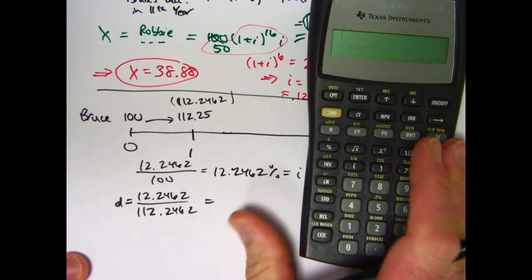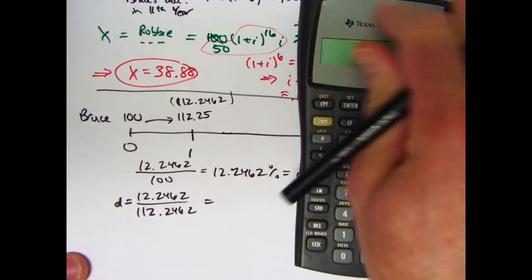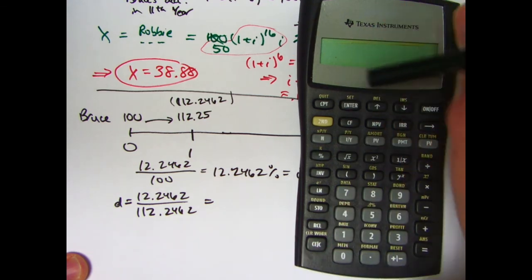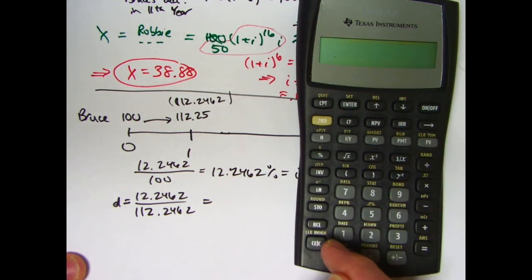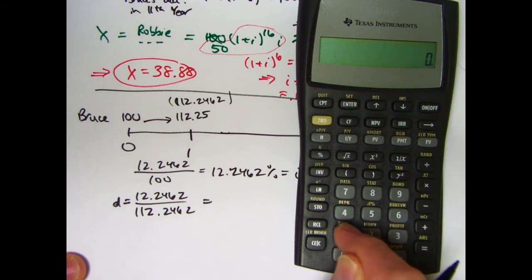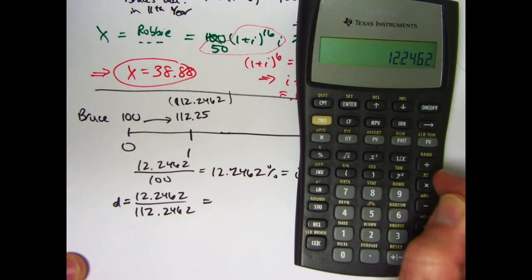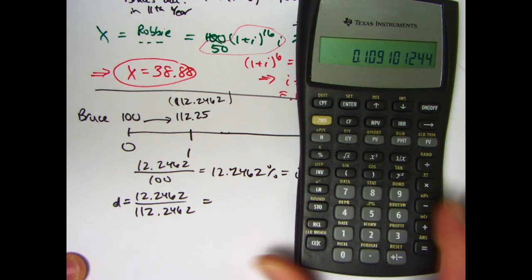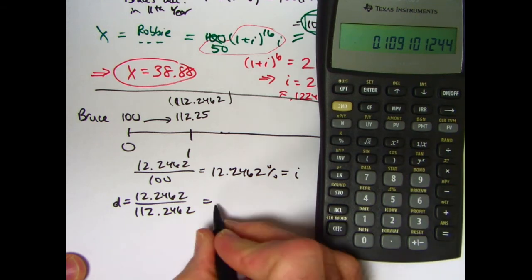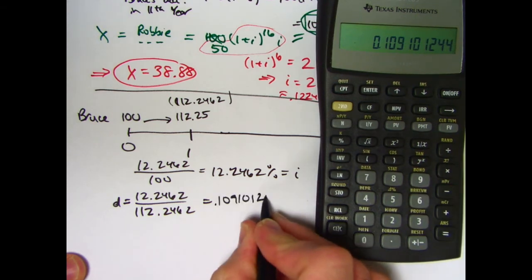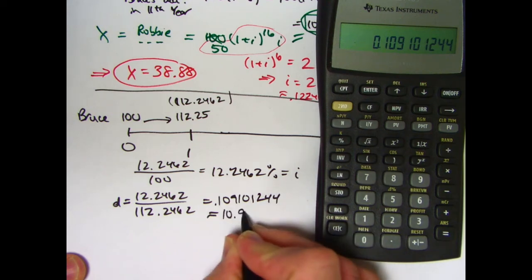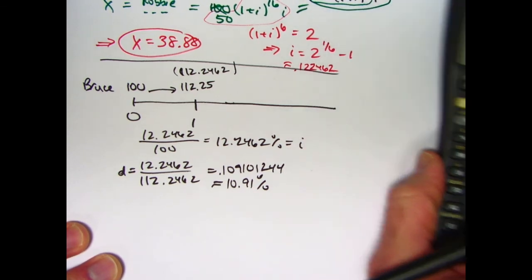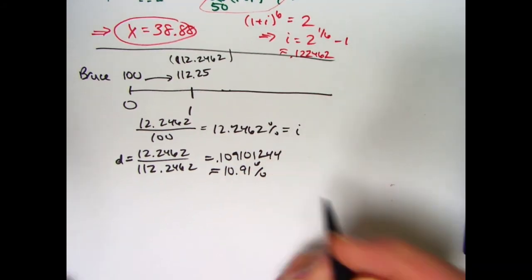Some financial transactions, especially with government transactions, it seems, do quote interest as an effective annual discount rate, especially with bonds. I guess that can occur in a corporate setting too. So, let's see here. What will this be? 12.2462 divided by 112.2462. It's going to be a bit smaller percentage. It's going to be about, well, it's 0.109101244, about 10.91% is the effective annual rate of discount. Why can the problem be solved this way? What is the relationship between i and d?